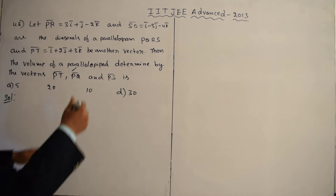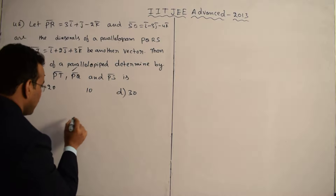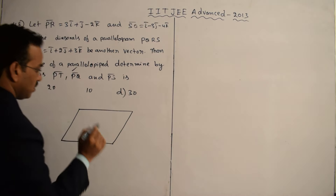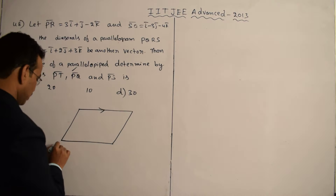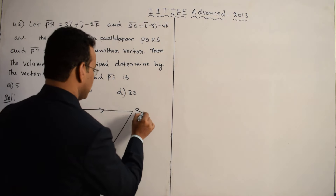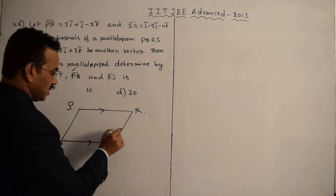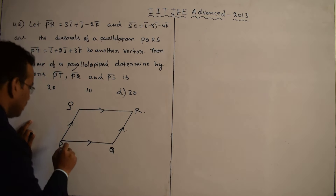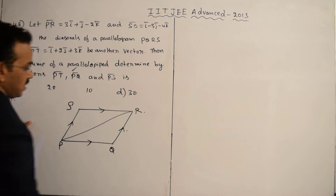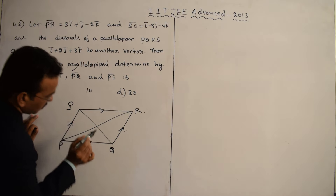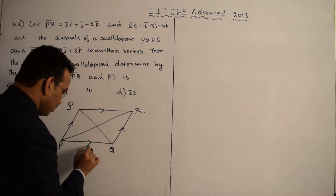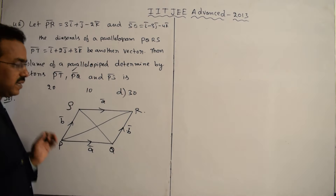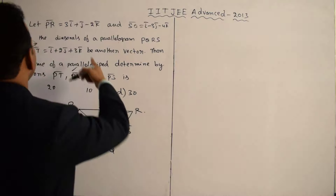Let us start the solution. Let us draw the parallelogram PQRS. In this parallelogram, opposite sides are parallel. Take vertices P, Q, R, S accordingly. The diagonals PR̄ and SQ̄ are given. We assume PQ̄ = Ā and PS̄ = B̄, so the opposite sides are also Ā and B̄ respectively, following the standard vector labeling of a parallelogram.